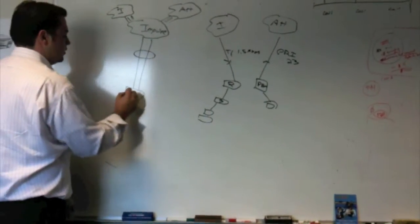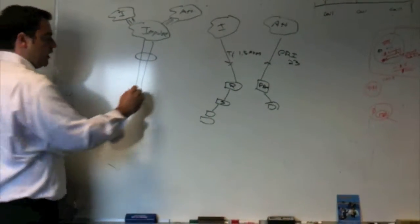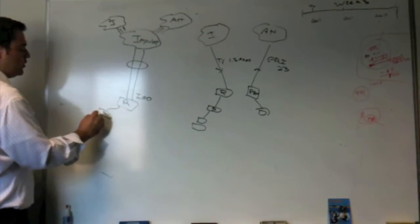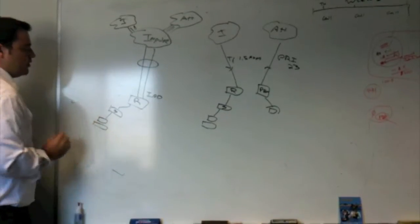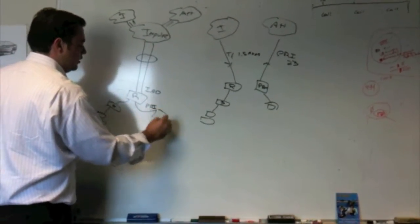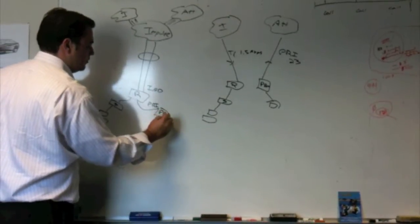It plugs into an advanced router that Impulse provides called an integrated access device. Out of that router goes to your switch and to your computers, and also out of that router is your PRI and your phone system to your phones.